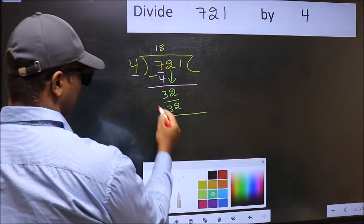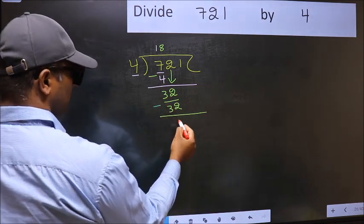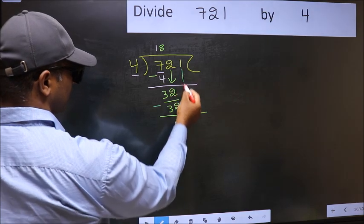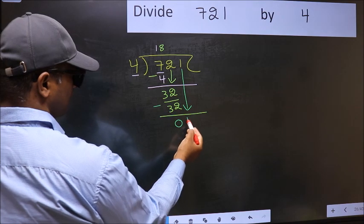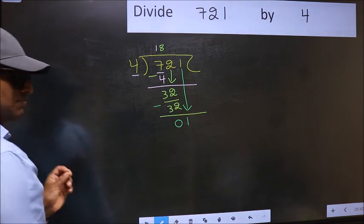Now you should subtract: 32 minus 32 equals 0. After this, bring down the beside number, so 1 down. After this step, the mistake happens.